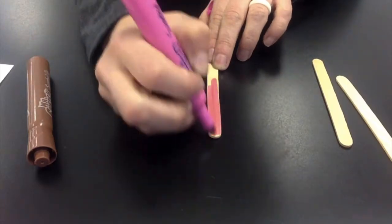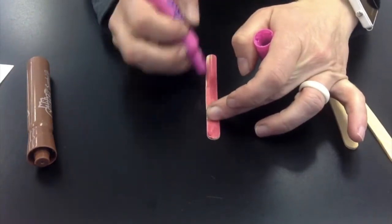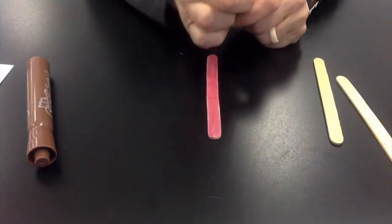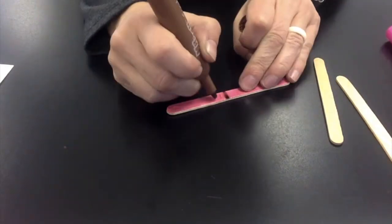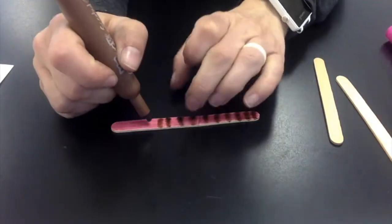Now while that's setting aside to dry I want you to take three popsicle sticks and with those popsicle sticks go ahead and color them with any kind of designs or patterns or colors that you would like.